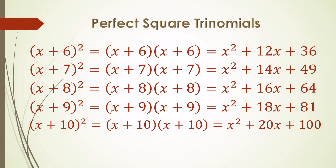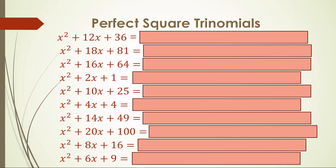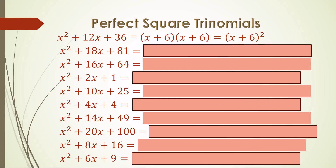Just as it was important to commit to memory the table of perfect square values, it is equally important you know these perfect square trinomials and be able to quickly recognize them. Let's practice. Think of the factorization for each one and see if you can predict each result. For the first one, what is half the middle term and the square root of the third term? Six, of course. The factorization is x plus 6 squared.